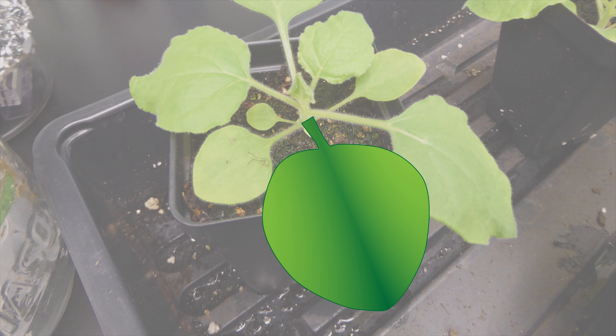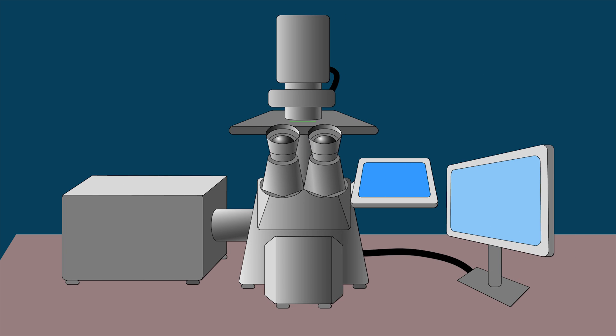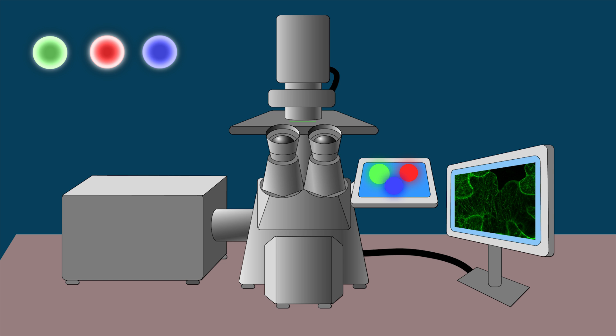After two days, we cut out a leaf section. This section has hundreds of cells in it. We view the leaf section under a confocal microscope. The microscope must have different colored lasers so we can see the fluorescent sections.